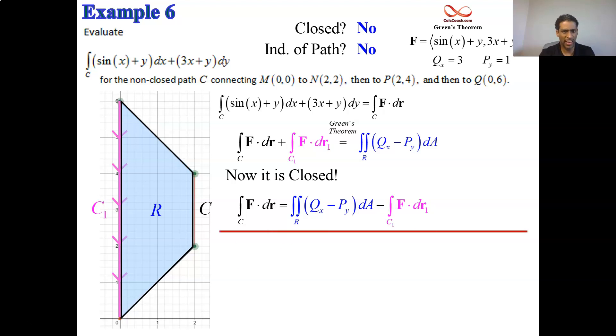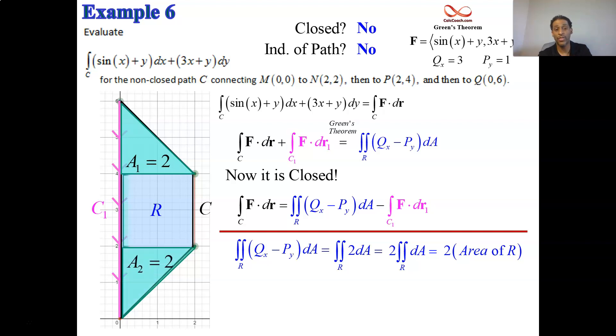What about that double integral? Well, that's just going to be twice the area because qx minus py is a 2. You can find the trapezoid formula or you can just break it up. We have a triangle of area 2, another triangle of area 2, and a square of area 4. So the area is double 8. The area is 16. I mean, sorry, the value of the double integral is 16. The area is 8. Okay, great. That takes care of that. All we need is this line integral that we add on, who gets subtracted away, and we're done.